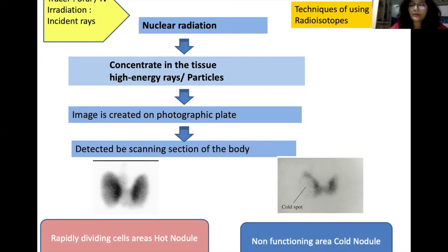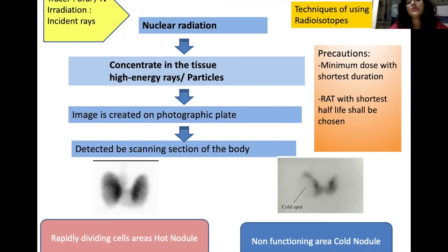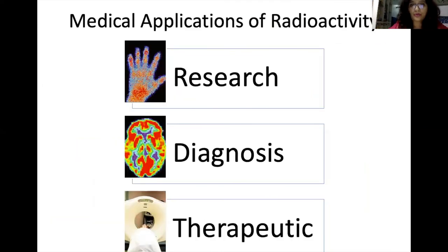The precautions when dealing with radioactivity include using the minimum dose for the shortest duration to avoid radiation hazards. Radioisotopes with the shortest half-life should be chosen so that they give a burst effect and good images in less time.